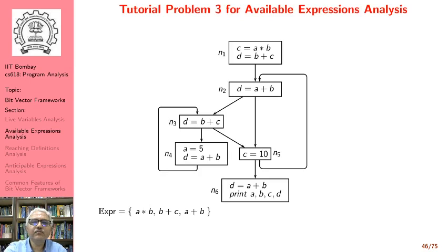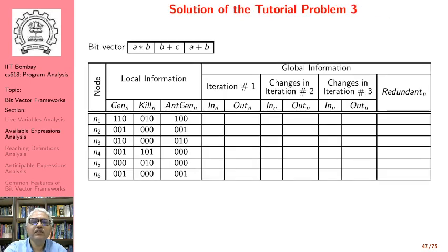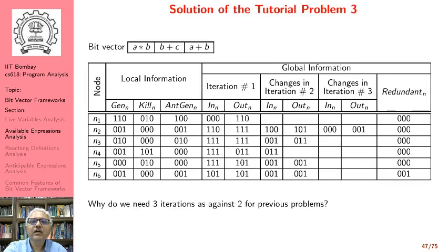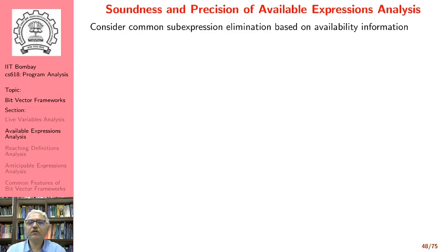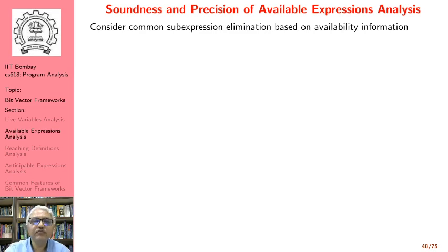There is a third tutorial problem here for available expressions analysis. What I want to now do is talk about soundness and precision of available expression analysis, much the same way we talked about soundness and precision of live variables analysis. In order to motivate this, consider common sub-expression elimination based on availability information — based on the information about expressions that are available.